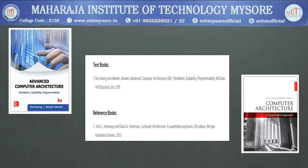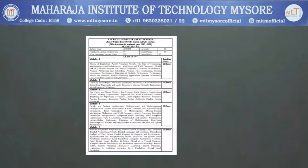Module 1 is derived from Part 1 — chapters 1, 2, and 3 of the prescribed textbook. Module 2 is derived from Part 2, chapter 4. Module 3 is derived from two chapters. Module 4 is from Part 3 — chapters 7, 8.1 to 8.4, and chapter 9. Module 5 covers chapters 10, 11, and 12.